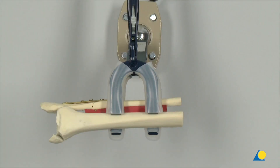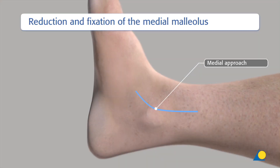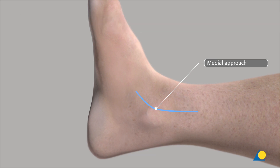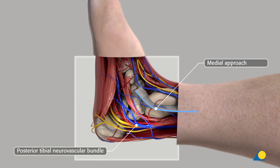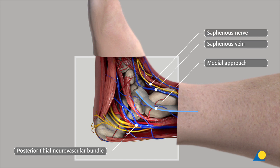The next step is the reduction and fixation of the medial maleolus. On the medial side, a medial approach is used through an anteriorly curved medial incision on the medial maleolus. The posterior tibial neurovascular bundle must be respected. The surgeon should be aware that the great saphenous vein and the saphenous nerve lie anterior to the incision.